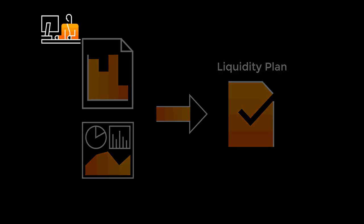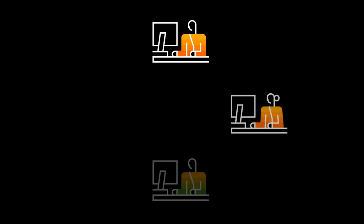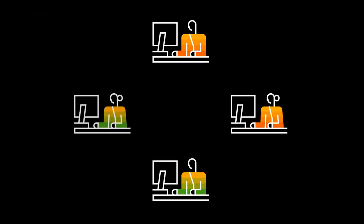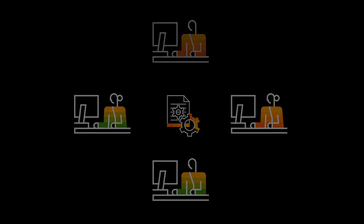The approval process enables group cash managers to work seamlessly with subsidiary cash managers to develop a centralized plan for the entire company group. Let me show you how it works.